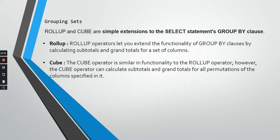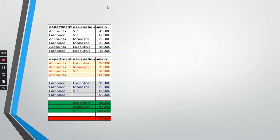Ideally, rollup and cube are almost the same — there is not much difference between both commands. To illustrate why we want to use this: I have a table with department, designation, and salary. There are three records for the accounts department — VP, manager, and executive — and three records for finance — VP, manager, and executive — with their respective salaries. If we want to generate a report with individual records, department totals, designation totals, and a grand total, that is where these functions help.